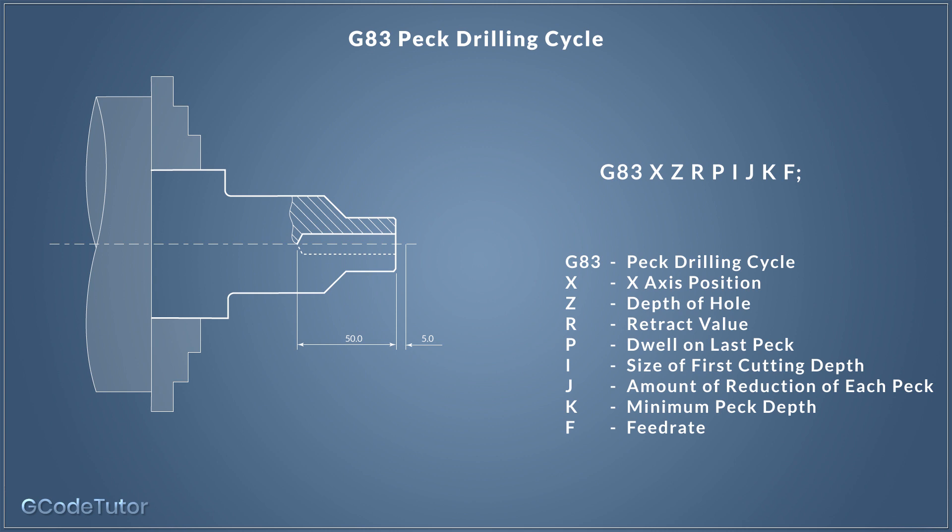That's the advanced version of the G83 peck drilling cycle. Many of the features can be omitted — we don't need to use I, J, and K. We don't need to use the X position if the tool is already at zero, and we can also remove the dwell value if needed.